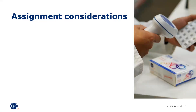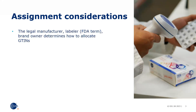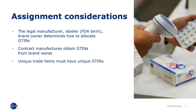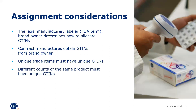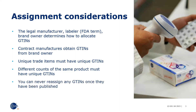Let's start with the first step of assigning a GTIN to a new product. The legal manufacturer, labeler or brand owner determines how to allocate GTINs. Contract manufacturers obtain GTINs from their customers. Unique trade items must have unique GTINs. Different counts of the same product must have unique GTINs. You can never reassign any GTINs once they have been published.